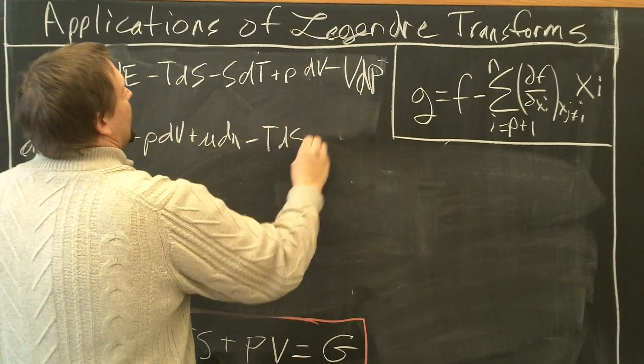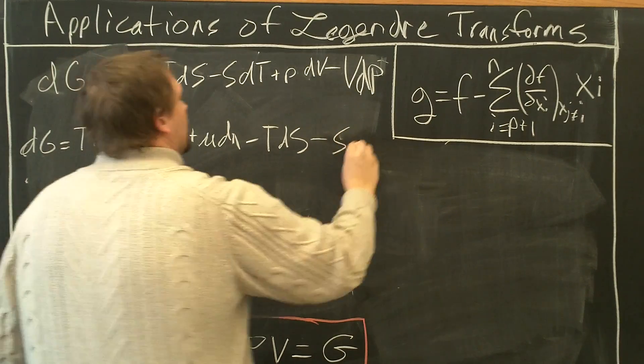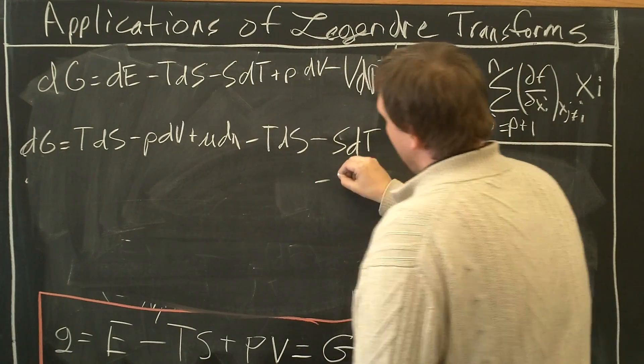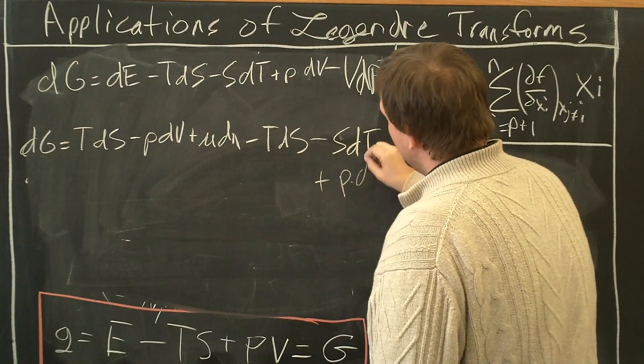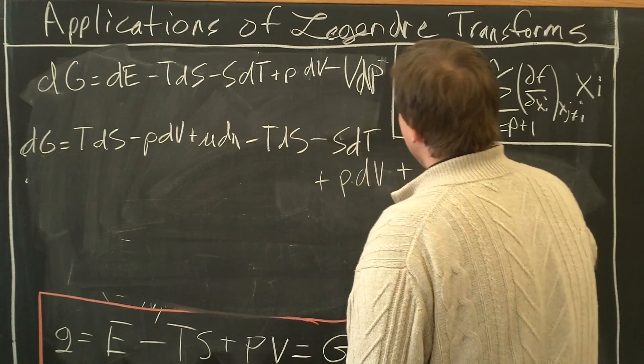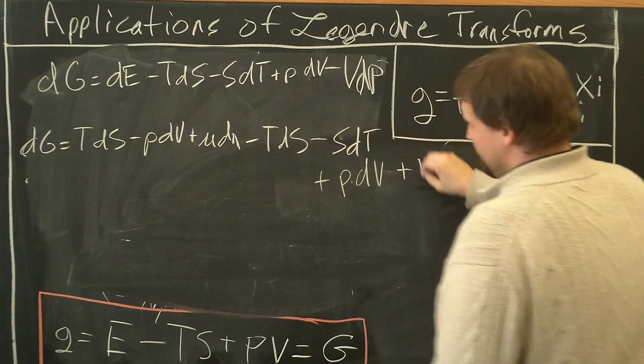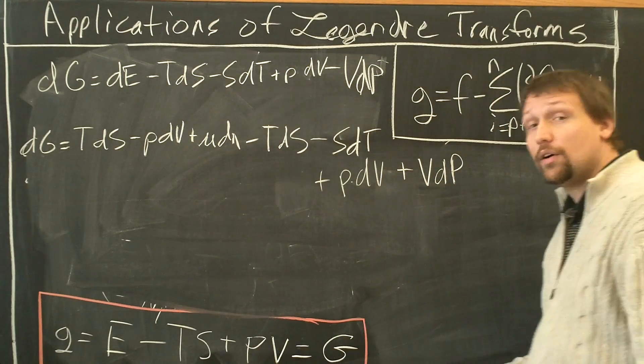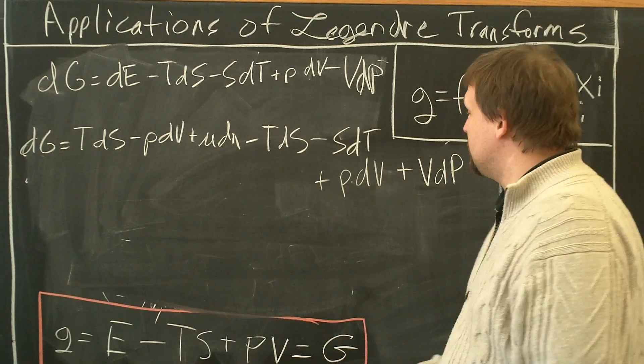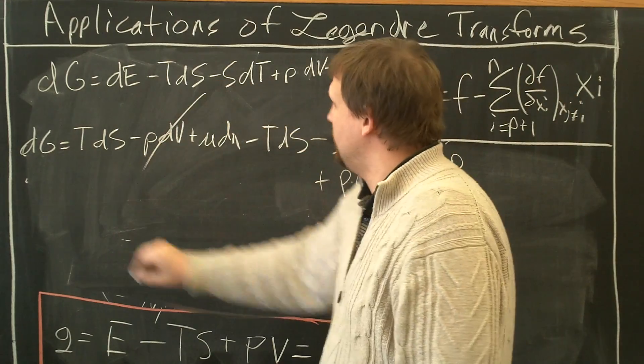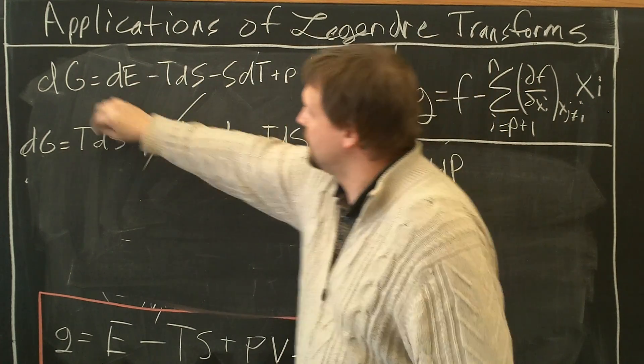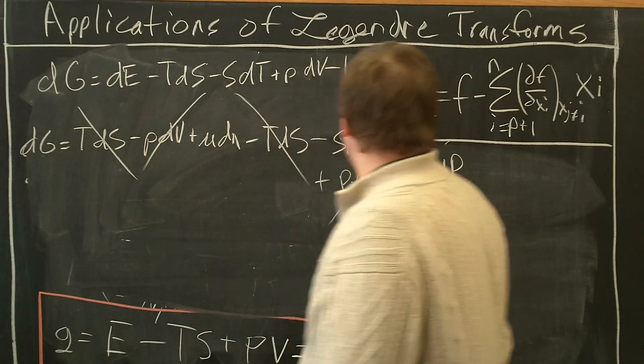Minus T dS minus S dT plus P dV plus V dP. Now what we have to do is just figure out what cancels out. Here, gone because of this. Here T dS, dS, gone.